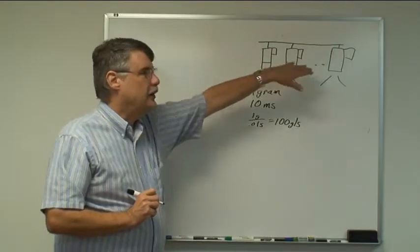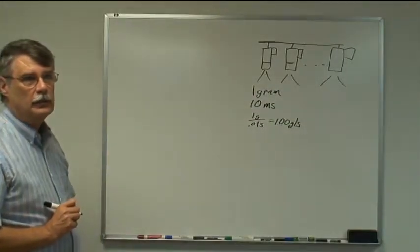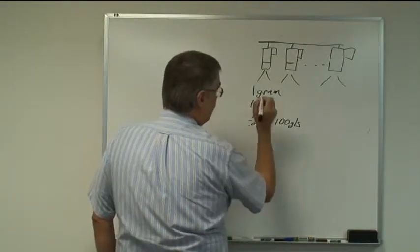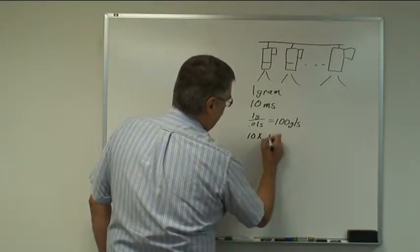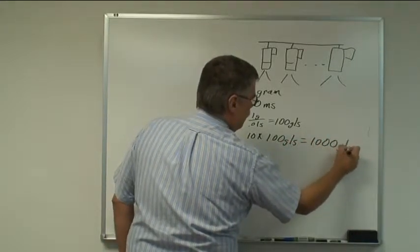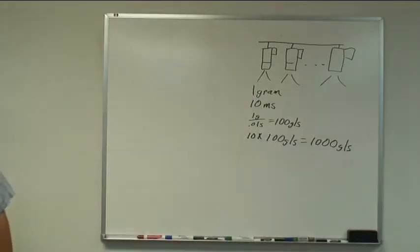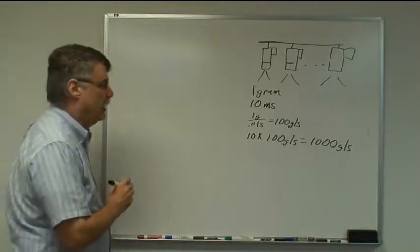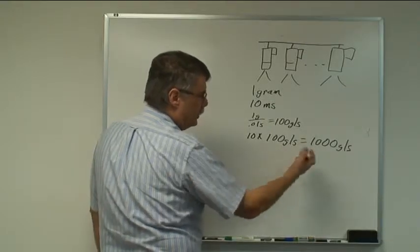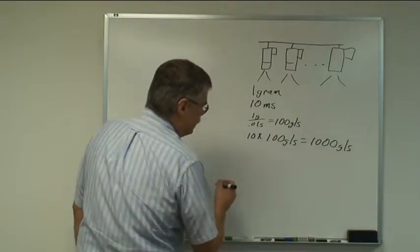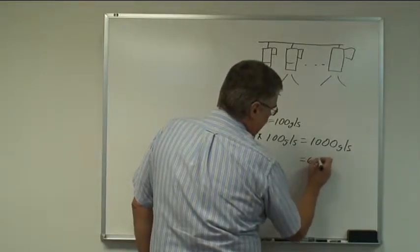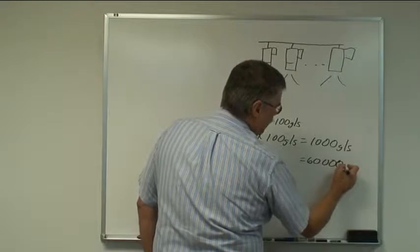If in our system here, let's say there are 10 guns across a 10-foot web. So it is 10 times the individual gun flow rate, 10 times 100 grams a second, which equals 1,000 grams a second. If we multiply this to convert it from grams per second to grams per minute, we multiply by 60 to convert from seconds to minutes. So it's also equal to 60,000 grams per minute.